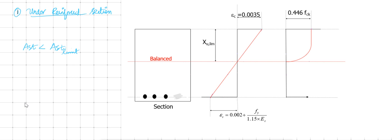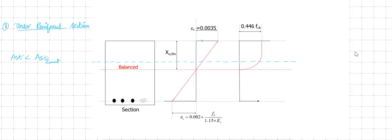By the first assumption in limit state of flexure, plane sections remain plane before and after bending, so strain variation is linear. When I draw the strain variation, the strain in concrete is at some point here, and from the linear variation, the strain in steel will also be shown at a corresponding lower position.